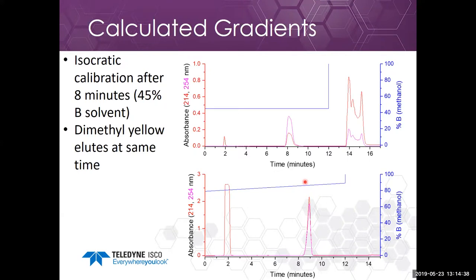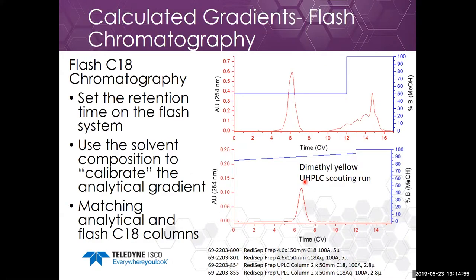In our system in PeakTrack we chose six minutes based on customer feedback. It brings the compound out far enough away from the void volume and the initial eluting compounds, yet we can still do a run very quickly. For flash chromatography C18, you set the retention time on the flash system — I chose six column volumes. I used the solvent composition to calibrate the analytical gradient. Teledyne ISCO makes matching analytical and flash C18 columns — the same C18 chemistry used on our prep HPLC.